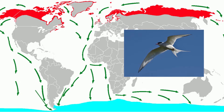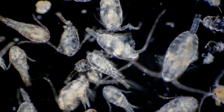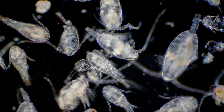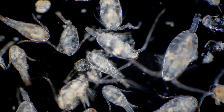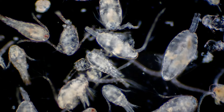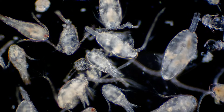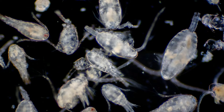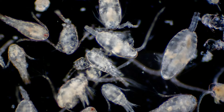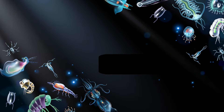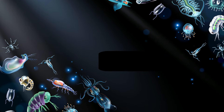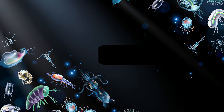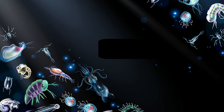Other animals like zooplankton migrate over short distances. During the day, zooplankton migrate to deep, dark waters to hide from predators. When the sun starts to set, zooplankton rides back to the surface to eat under the protection of darkness.